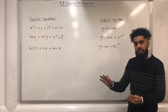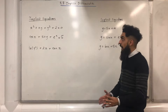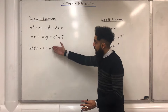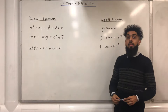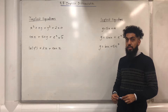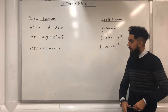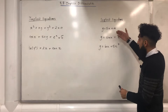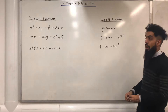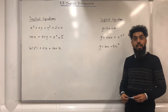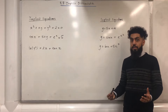The first part of this video is to go through what implicit equations are and what explicit equations are. Here are three examples of implicit equations. Each of these equations are called implicit equations because neither x nor y is the subject of the equation. Here are examples of explicit equations. Each of these equations are called explicit equations because for each equation y is the subject.